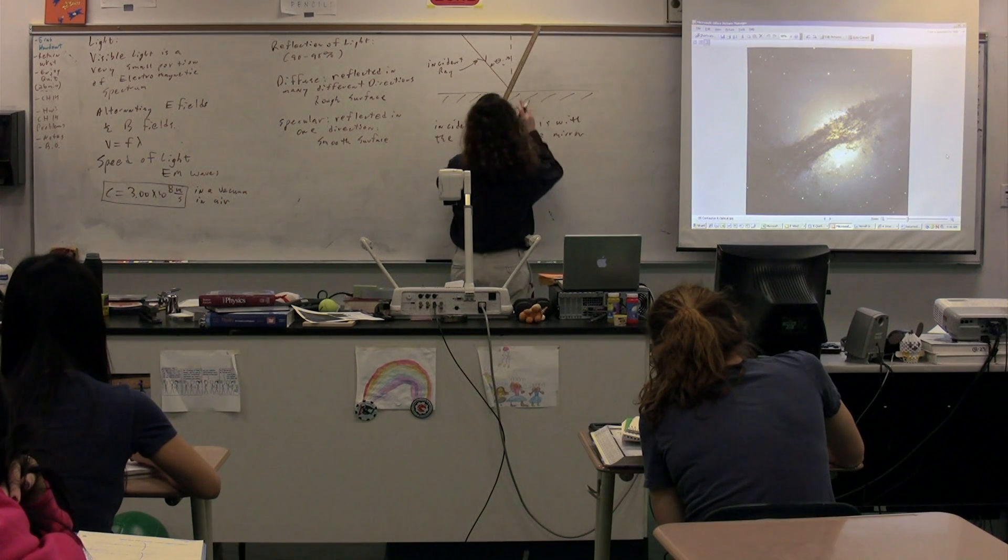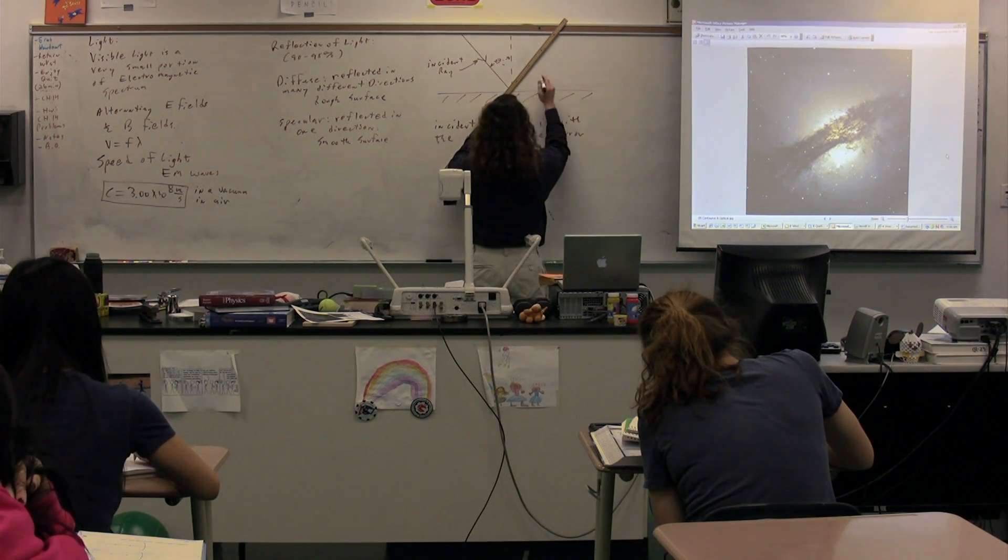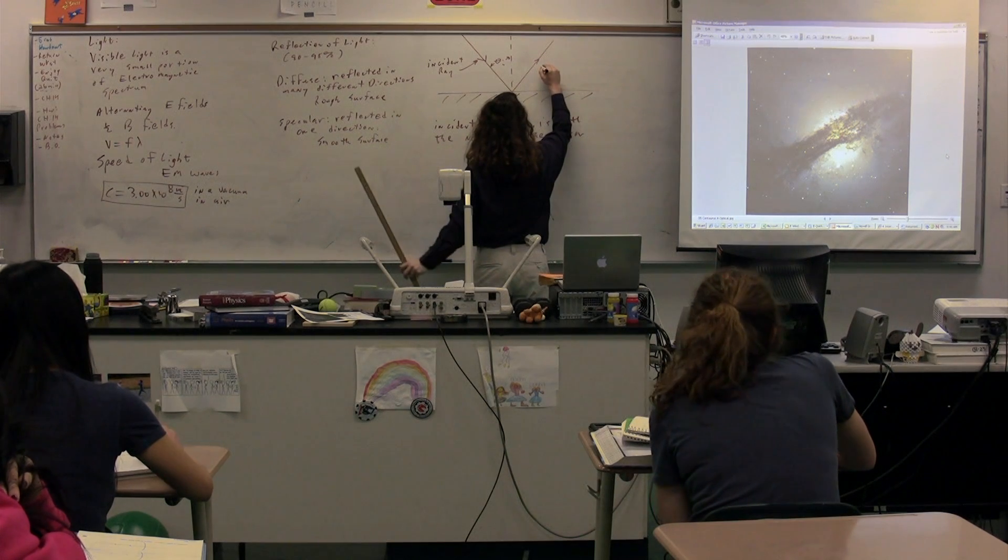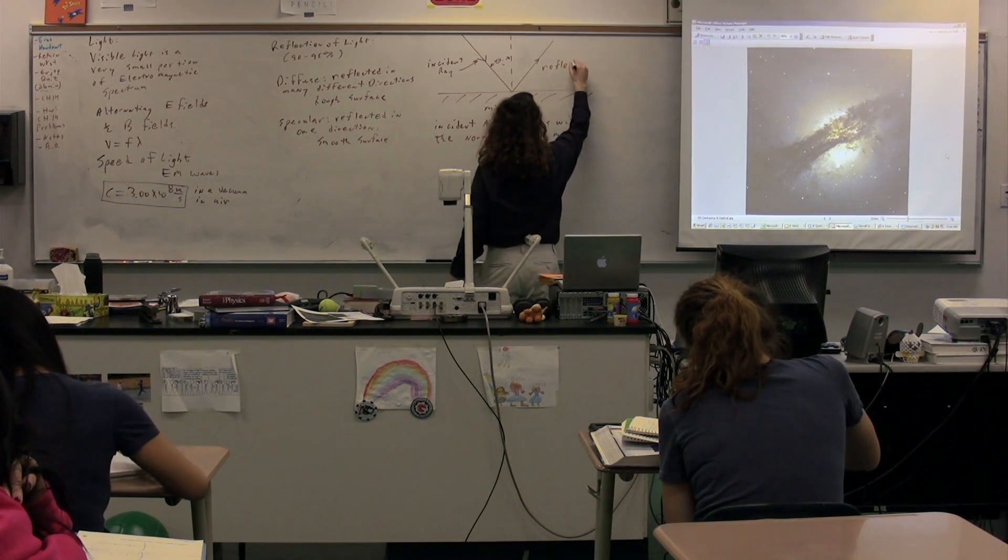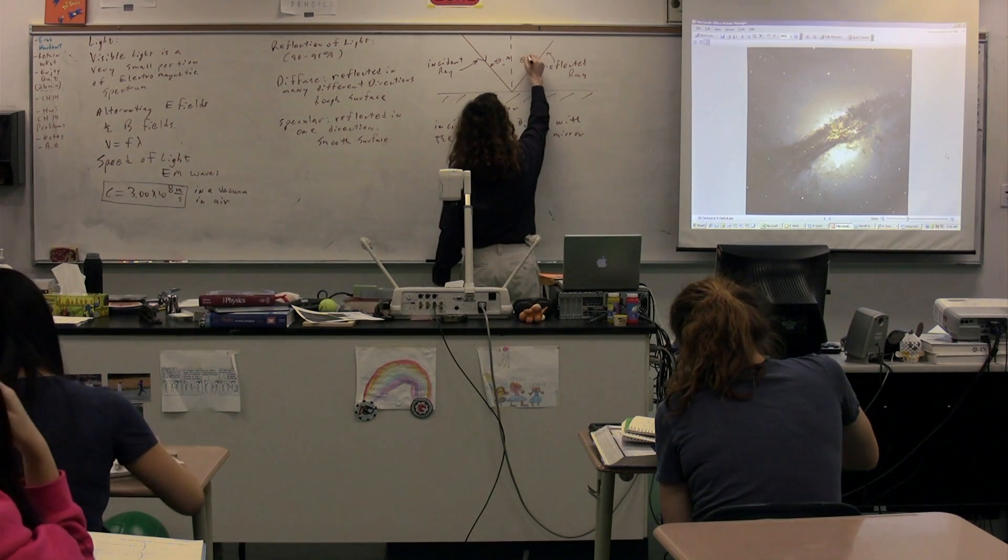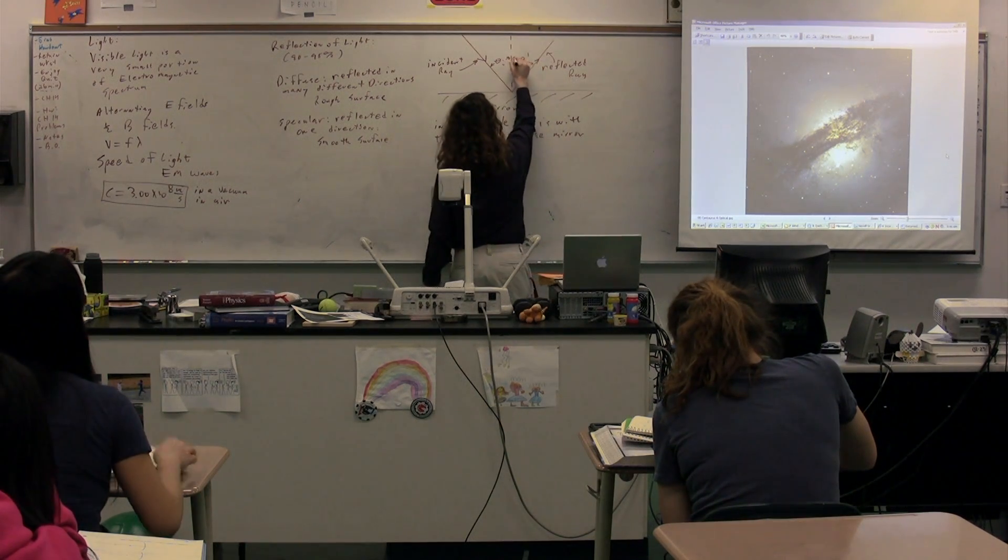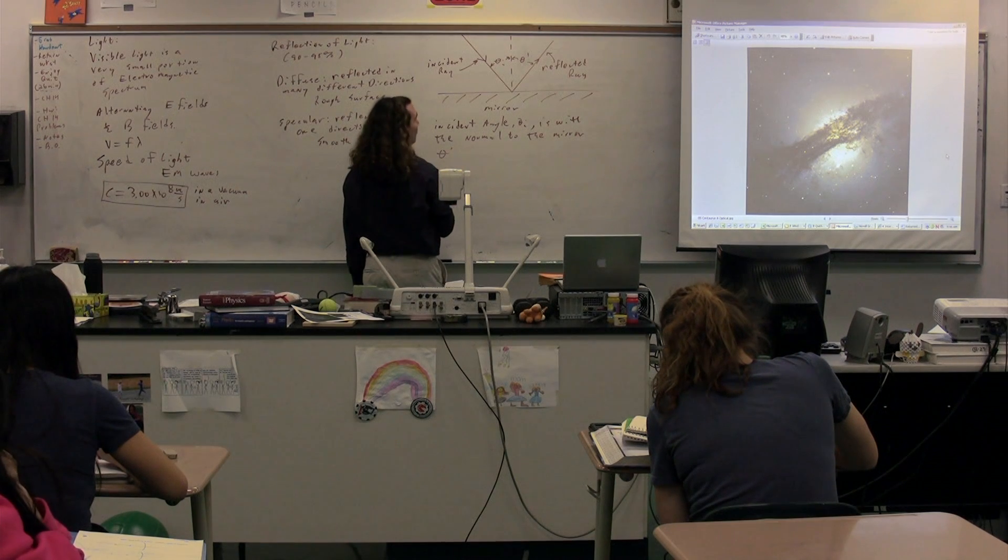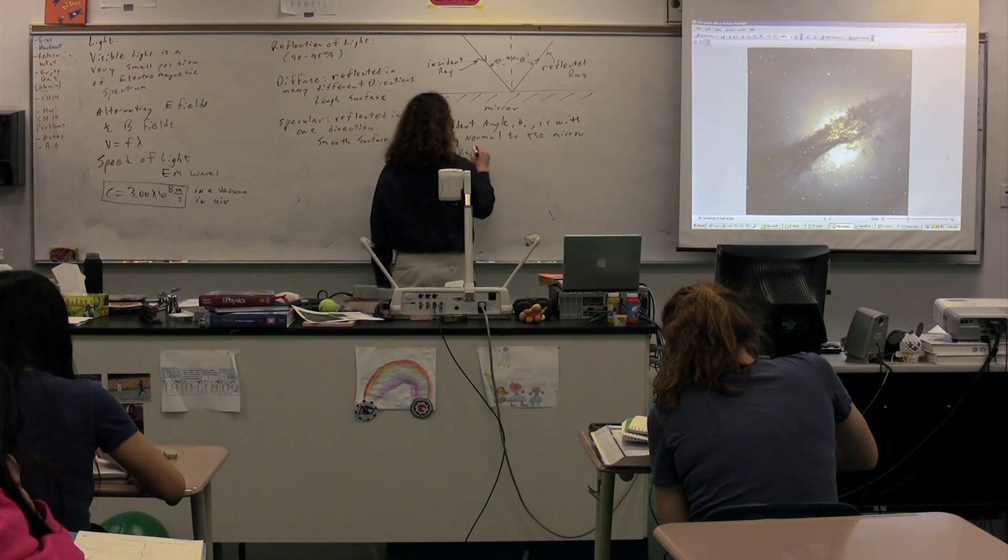We then have light being reflected, and this is our reflected ray. The angle of reflection is, again, with the normal. Theta prime is the angle of the reflected ray.